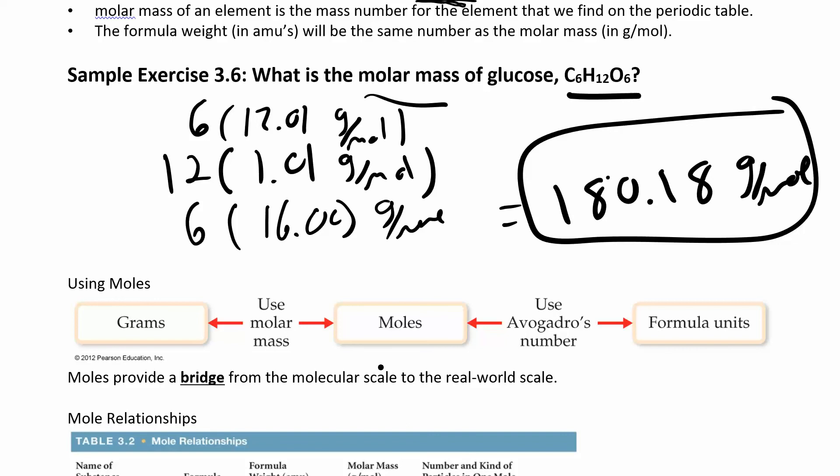So this chart down here kind of helps you convert. So you weigh out things in grams. You can use molar mass, grams to moles, to convert it to moles. And then we know a relationship between moles. We know how many formula units or how many atoms are in one mole. It's Avogadro's number.